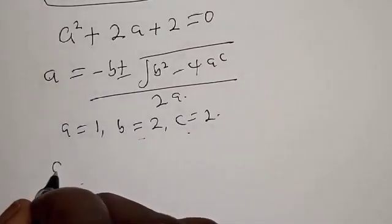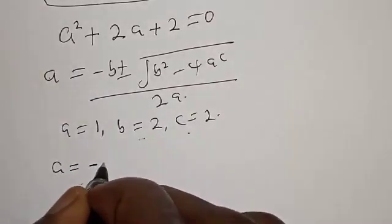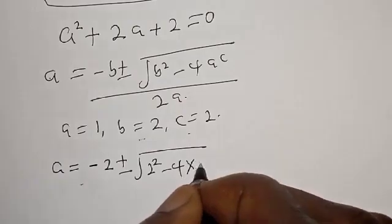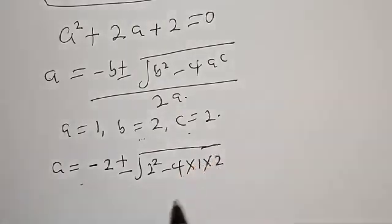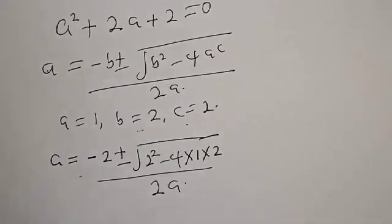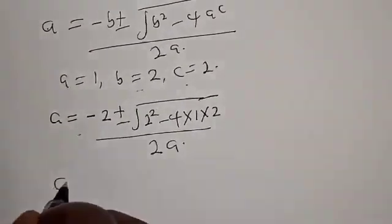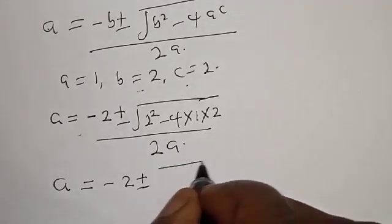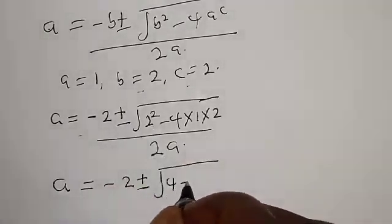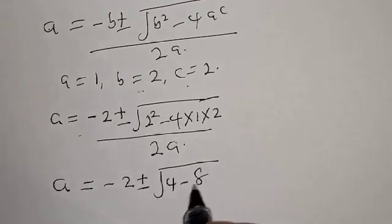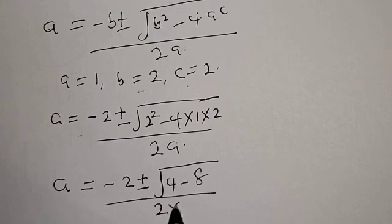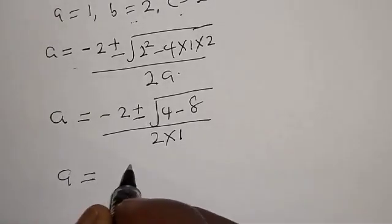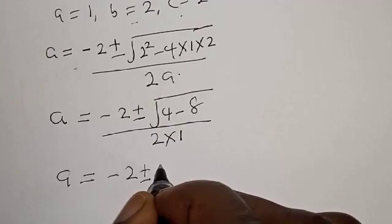Therefore, we have a is equal to minus 2 plus or minus square root of 2 squared minus 4 multiplied by 1 multiplied by 2, over 2a. Then we have a equal to minus 2 plus or minus square root of 4 minus 8 — that is 4 minus 8 equals minus 4 — over 2 multiplied by 1.